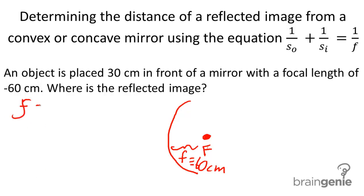So we have f as negative 60. We have the distance of the object, so, as 30 centimeters. So let's say the object is here.